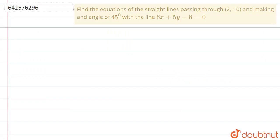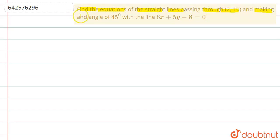Hello everyone, let's start the question. The question says: find the equations of a straight line passing through (2, -1) and making an angle of 45 degrees with the line 6x + 5y - 8 = 0.